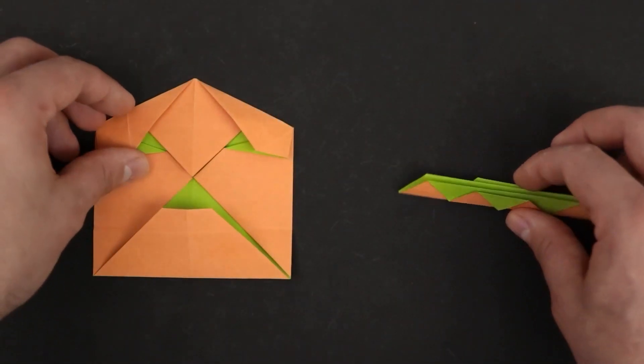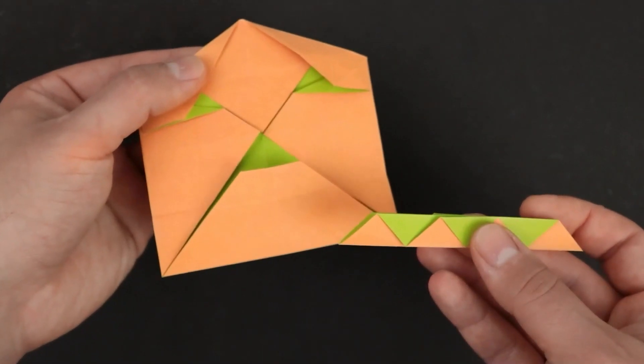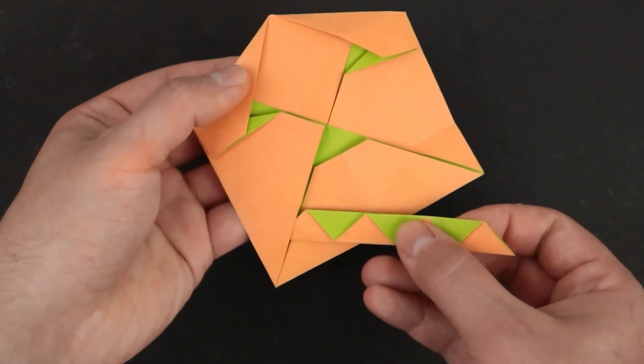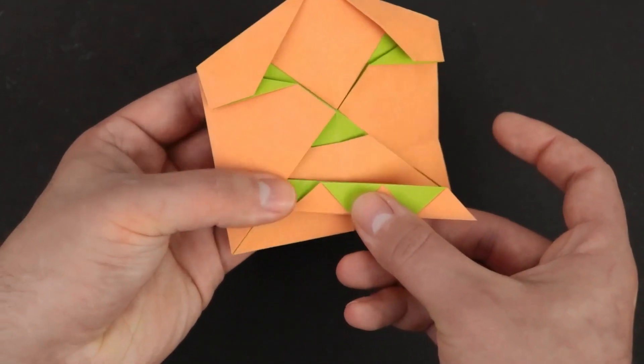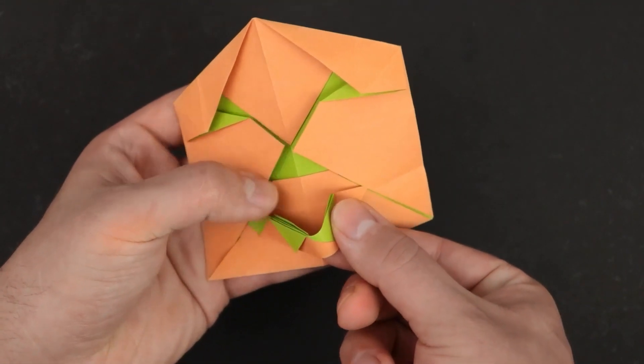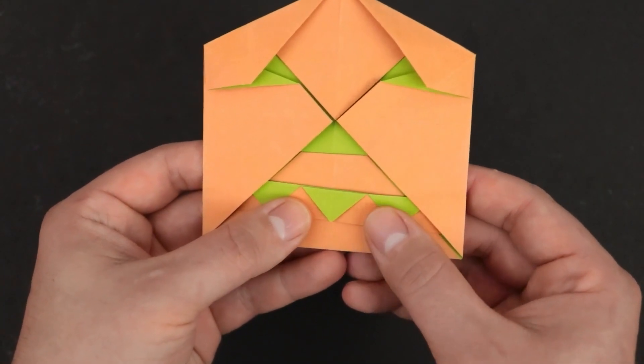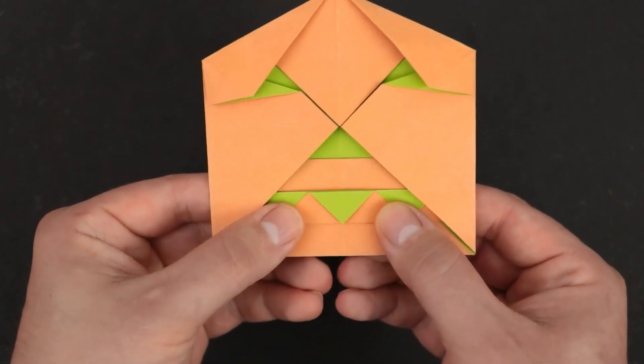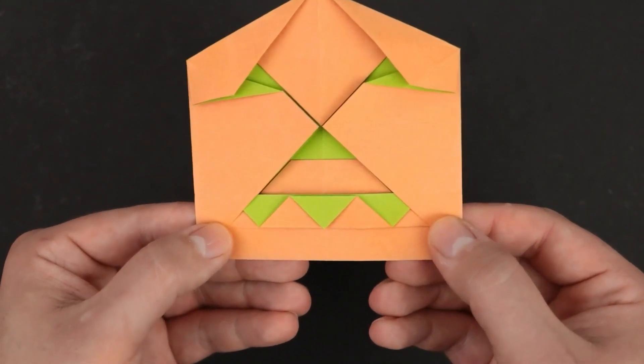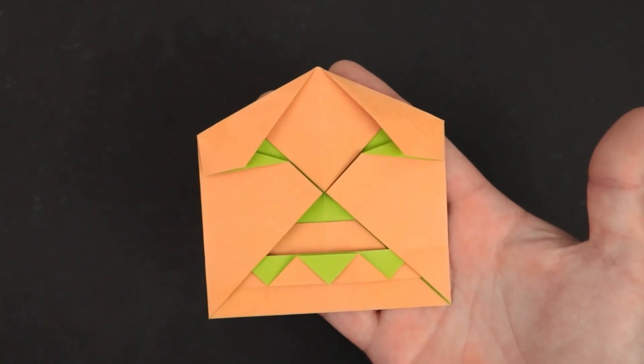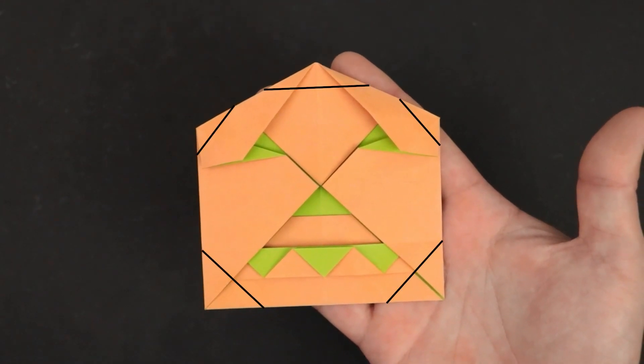Now that we have it ready, we can fit the smaller part into the larger one like this. We already have the pumpkin practically ready, the last step is to shape it by folding the corners.